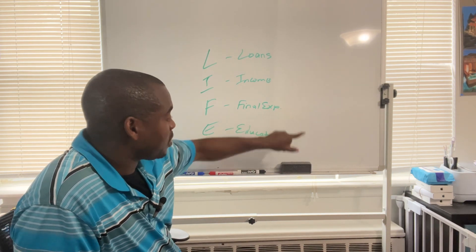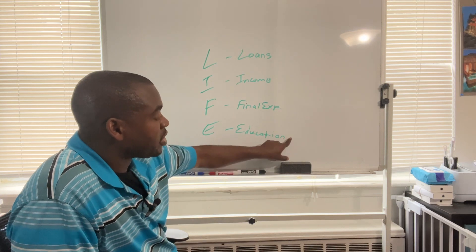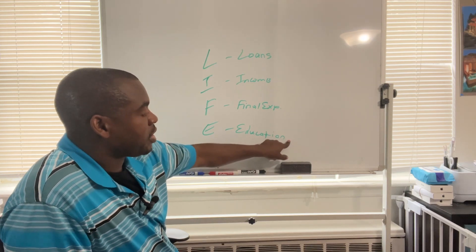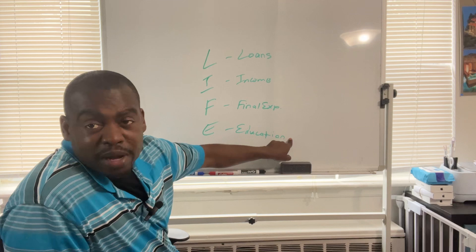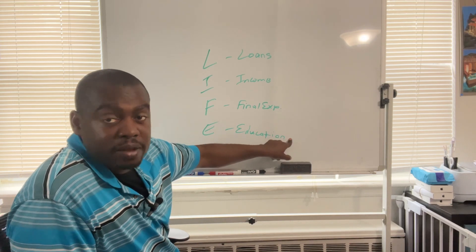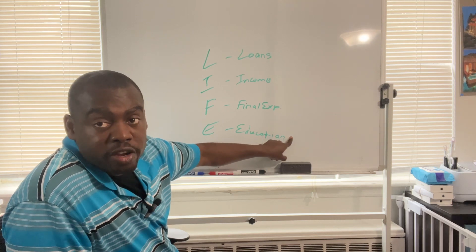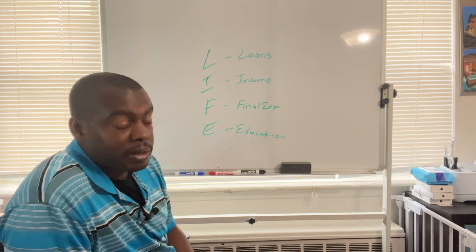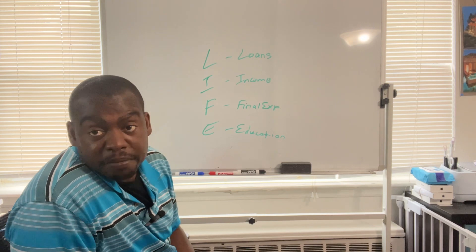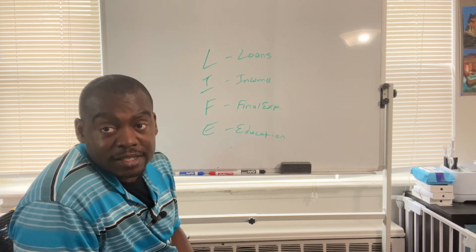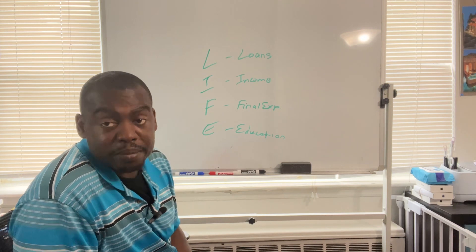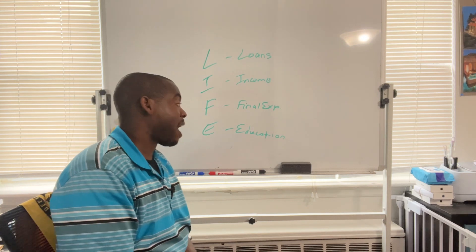And then your education, children's education. The average is about twenty-four for college specifically, about twenty-five grand a year. So over four years that's a hundred grand for each child.